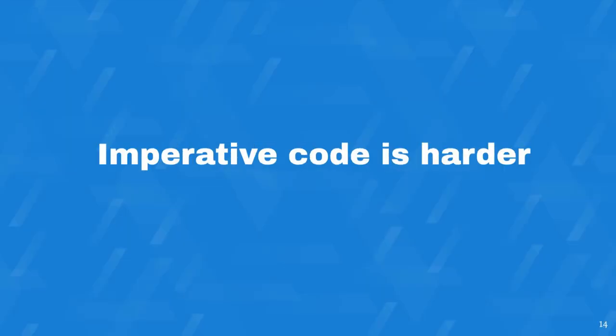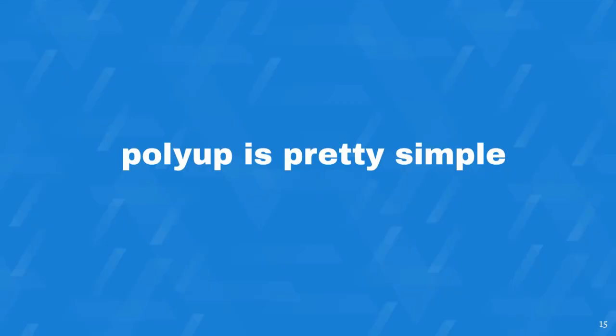Imperative code is harder. It's a sequence of instructions that interacts with state, and you have to carry a lot of information about what's going on to successfully and confidently transform imperative code. And that means that Polyup is actually really simple — if you read the code, it's very directly doing the transformations that are documented.